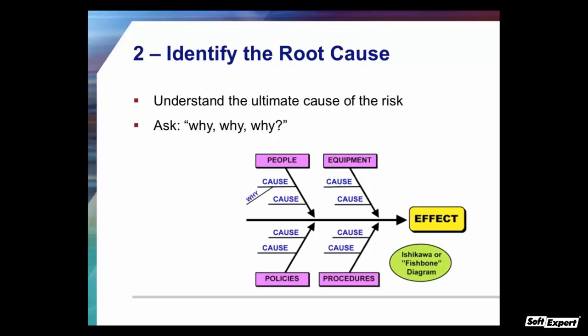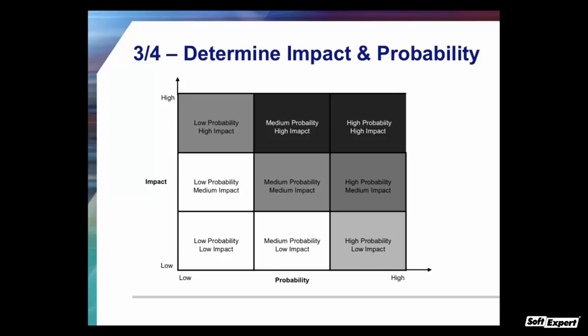Steps three and four are to determine the impact and probability of each identified risk. The worst risks are those with high probability and high impact — in the top right-hand corner. The top left-hand side shows low probability and high impact — risks that might not happen but, if they do, will have a big impact. For instance, it's very unlikely your building will disappear due to a bomb, but if it happens the impact is major — that's why most companies have disaster recovery and backup plans. There's a very low probability, but the impact is so high that we do something about those risks.